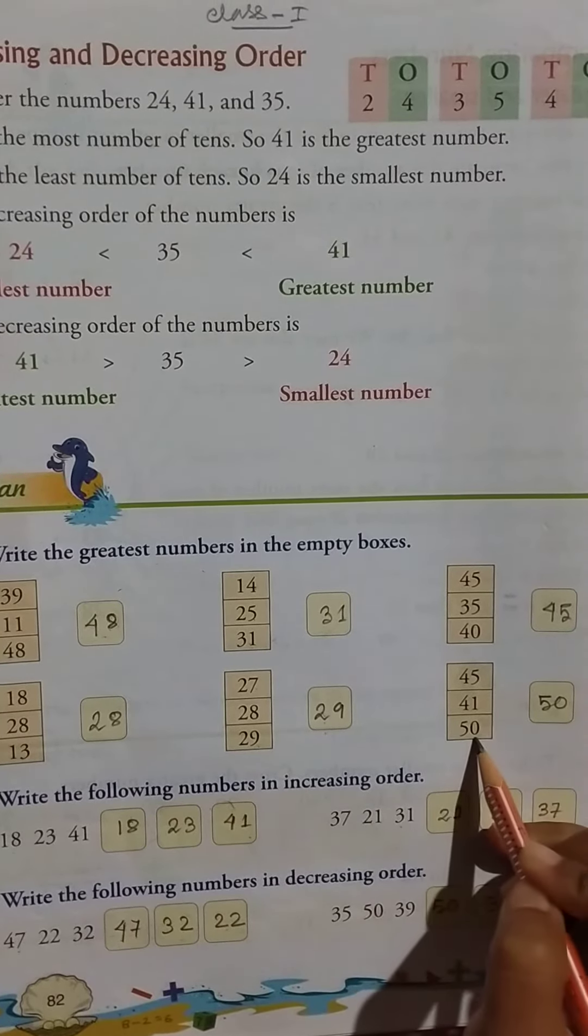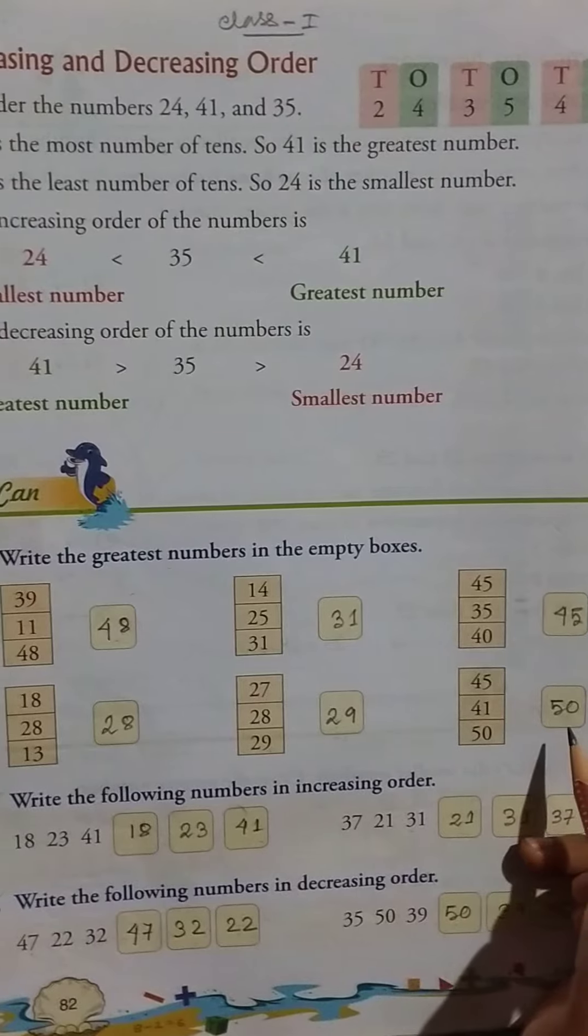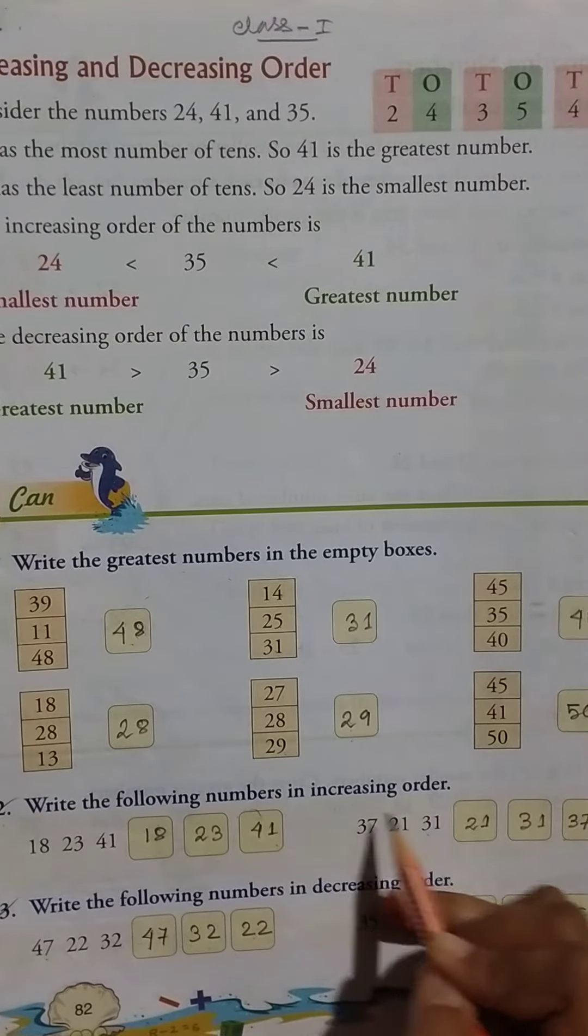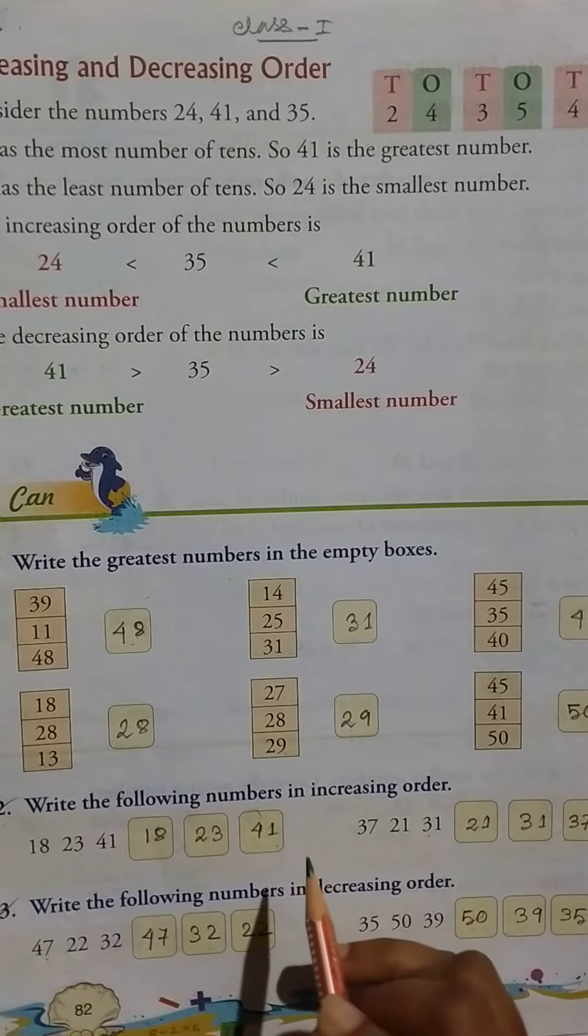Then 45, 41, 50, so here 50. Now write the following numbers in increasing order. Increase means choto theke boru. So 18, 23, and 41, so here 18, 23, 41. Then 37, 27, 21, 31...